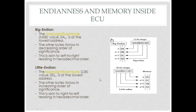In Little Endian, the least significant byte is filled to the lowest address. So 0D is filled to address 8000, 0C to 8001, 0B to 8002, and 0A to 8003. Little Endian is right-to-left reading — the rightmost value is filled to the lowest address and the leftmost value to the highest address. So in Big Endian, the lowest address holds the MSB; in Little Endian, the lowest address holds the LSB. This is the difference between Big Endian and Little Endian with respect to memory inside a controller.